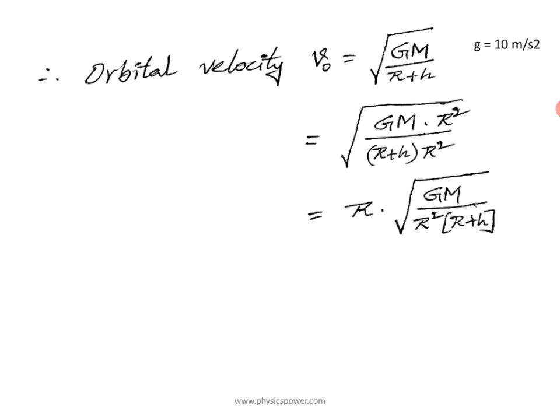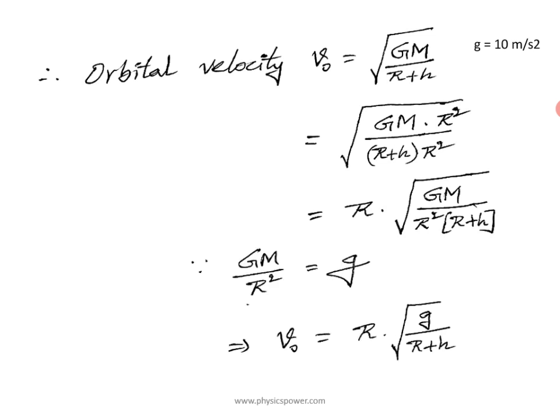For that purpose, multiply the expression inside the root by r²/r². Then r² in the numerator can be kept outside the root, leaving r and the remaining part: square root of (GM/r²) × 1/(r + h). Now inside the root, GM/r² is nothing but small g. So the formula becomes v₀ = R × square root of g/(r + h).